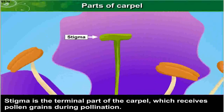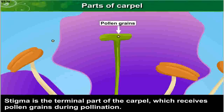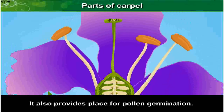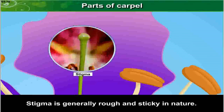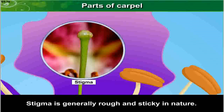Stigma is the terminal part of the carpel which receives pollen grains during pollination. It also provides a place for pollen germination. Stigma is generally rough and sticky in nature.